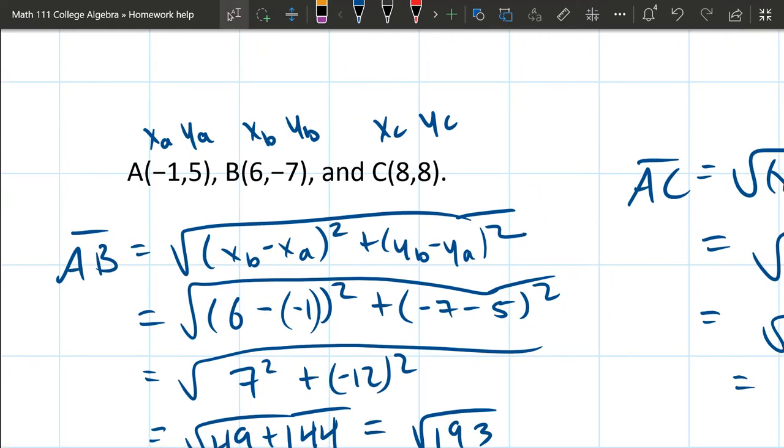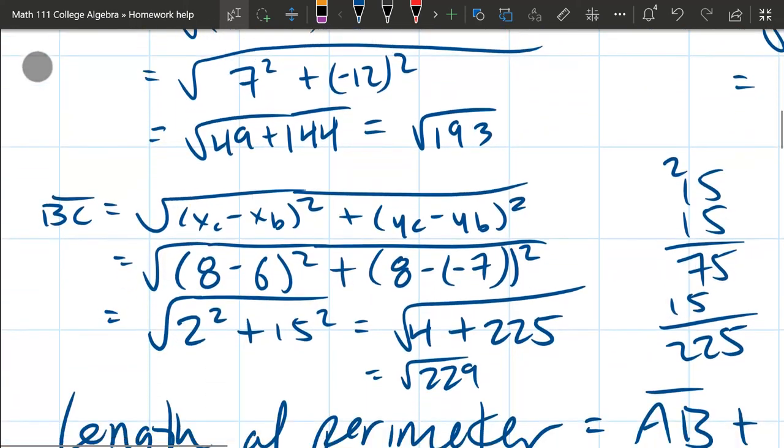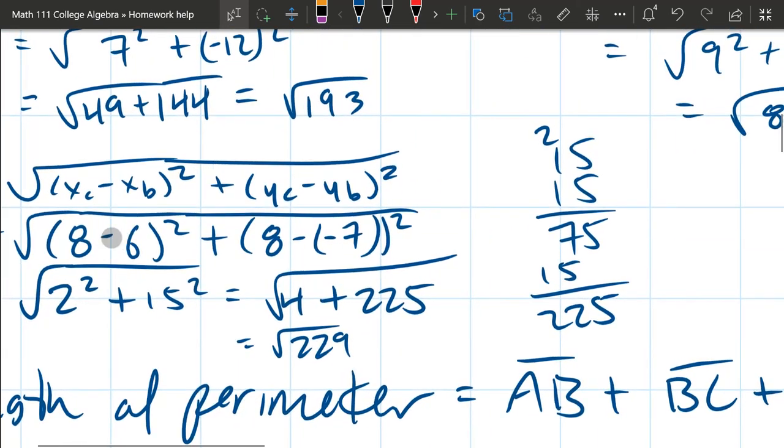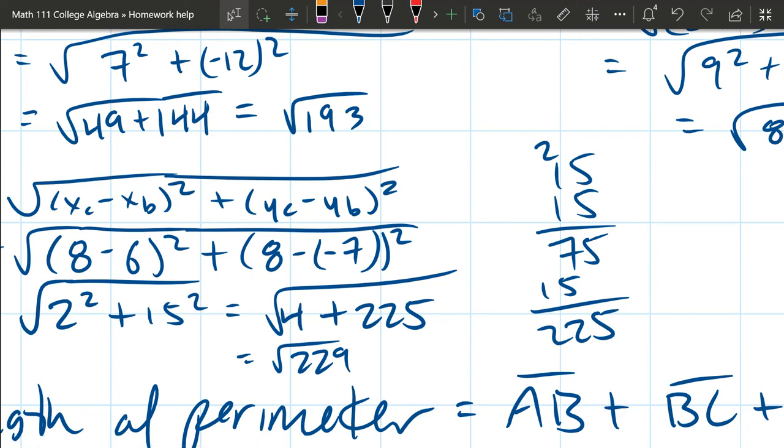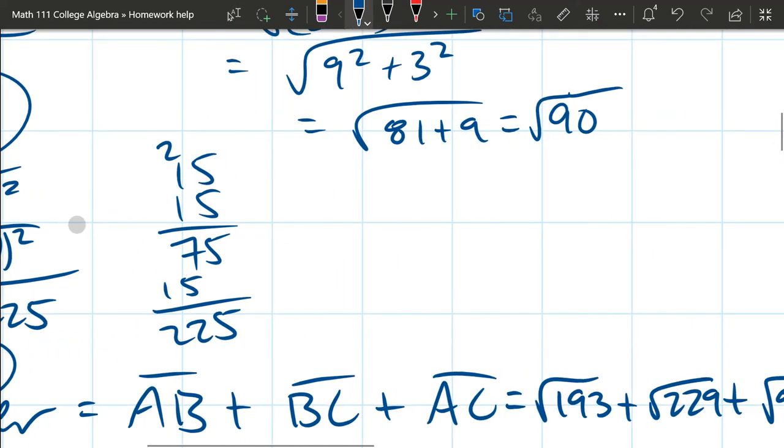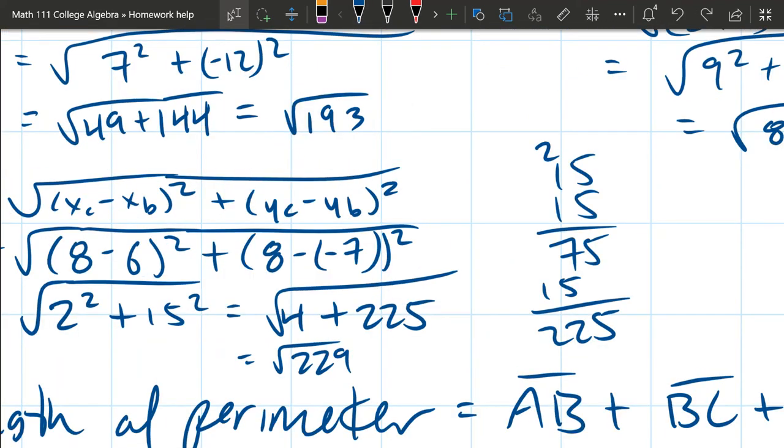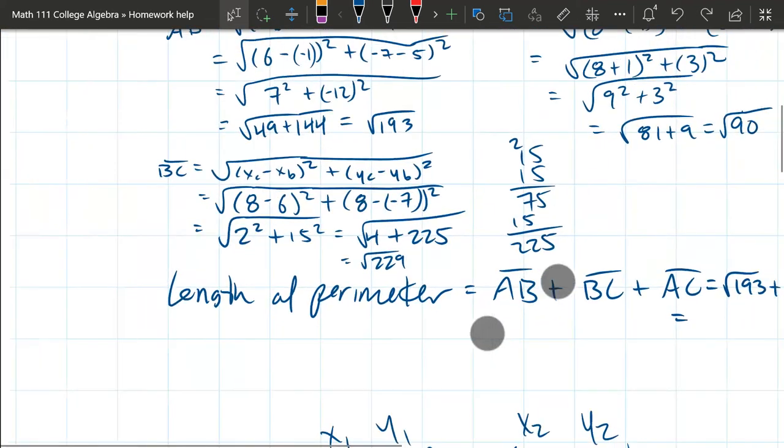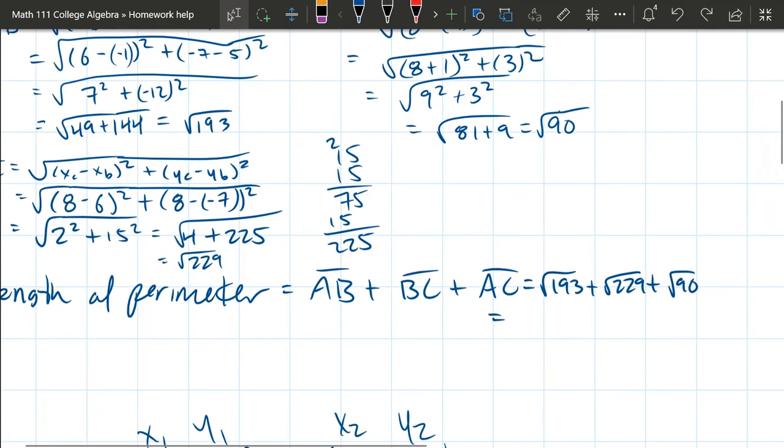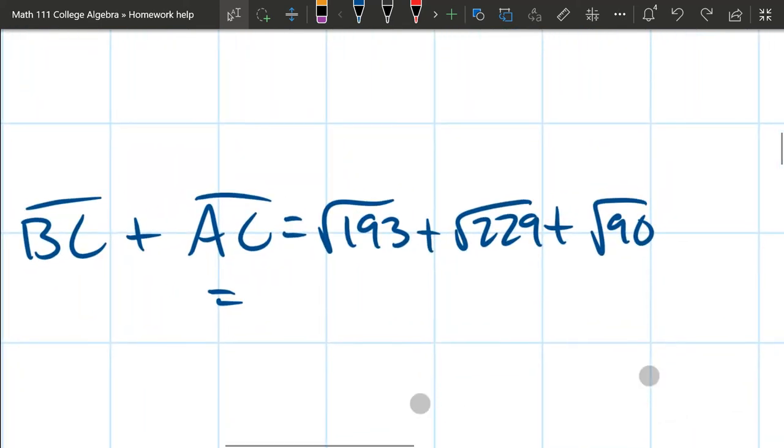All right, you do this three times. You get three numbers. They're each going to be a square root. Probably not going to reduce nicely. So I got square root 193, square root 229, and square root 90. So we're going to go ahead. Those three numbers need to be added together. That's how you get the perimeter. So you add the AB length, the BC length, and the AC length.